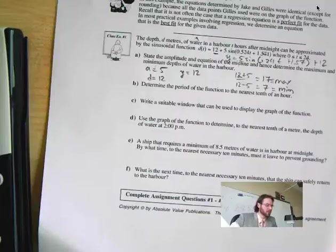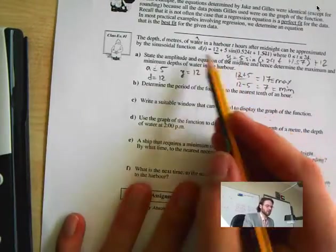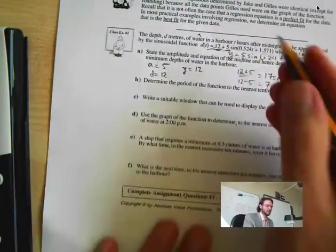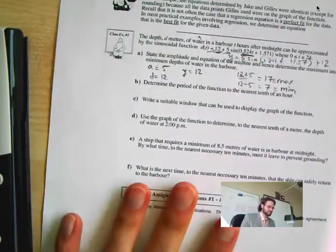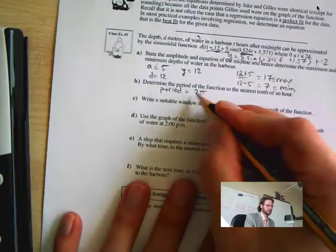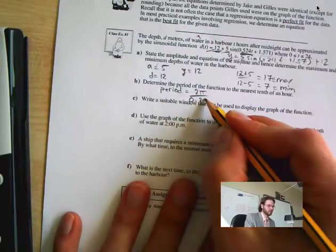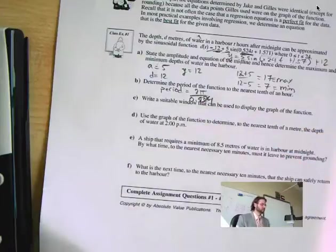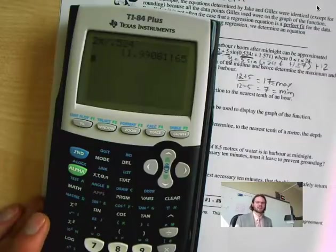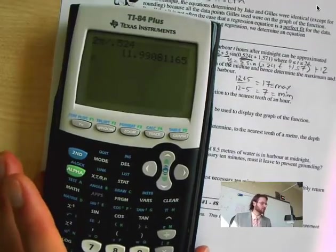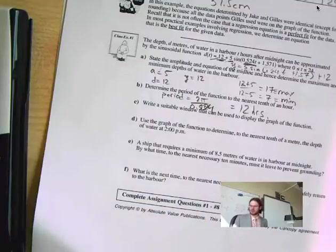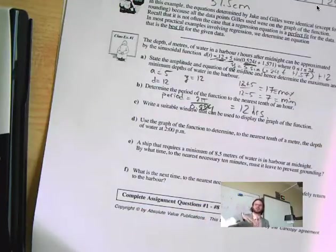The next part is determine the period of the function. These here determine my up and down. Now for my period, that has to do with this 0.52. But that's my b. So period is equal to 2 pi divided by b. My b is 0.524. So I put that in my calculator and I end up getting 12 to the nearest tenth of an hour. Equals 12 hours. Every 12 hours. That makes sense.